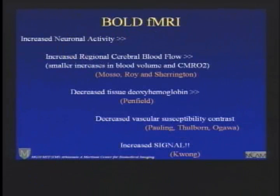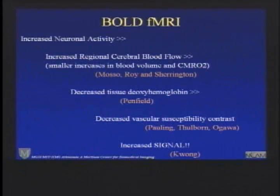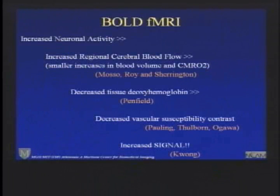The cascade of events that links these physiological changes to the signal changes is actually an interesting one, and the story is now more than 100 years old. It was more than 100 years ago that Angelo Mosso and the English physiologist Roy Sherrington showed that there were these physiological hemodynamic changes that occurred in the brain when the brain was more active. And the great neurosurgeon Wilfred Penfield actually showed during surgery that the brain increased its oxygenated hemoglobin when the brain was stimulated — that was in the 1930s.